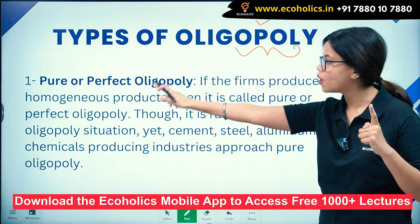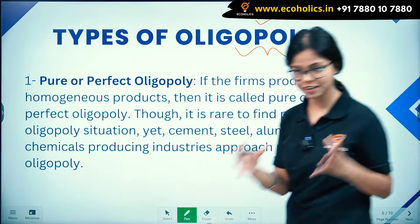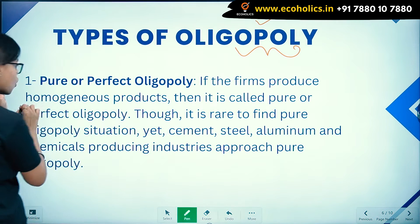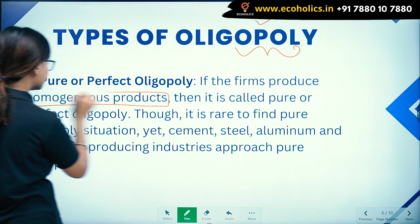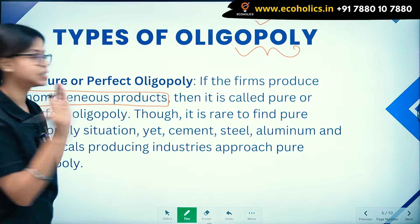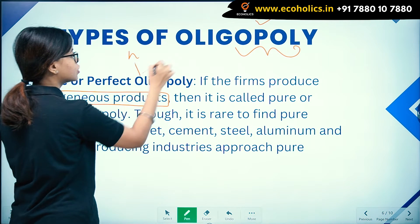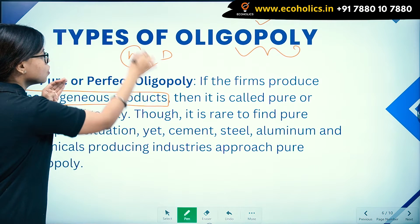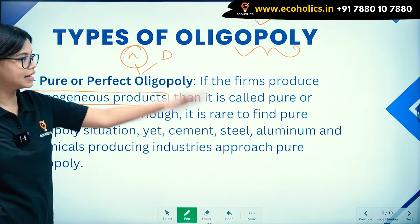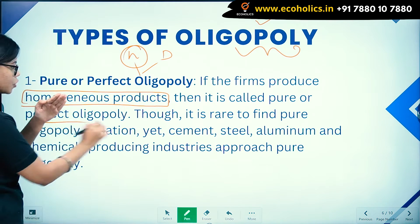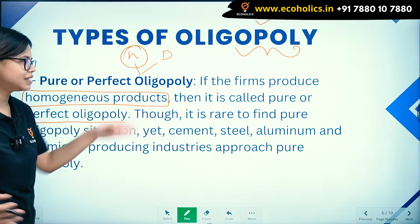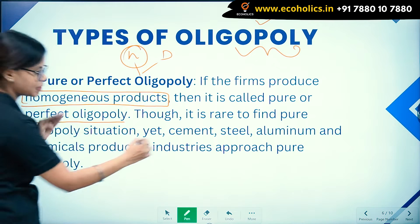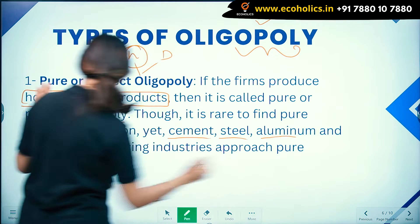The first type is pure or perfect oligopoly. This means the firms produce homogeneous products. In oligopoly, firms may sell either homogeneous or differentiated products. If a firm sells homogeneous products, it is known as pure or perfect oligopoly.